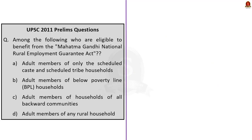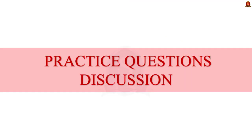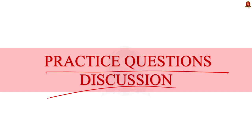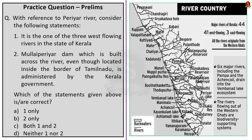Let us move on to the preliminary practice question discussion. With reference to Periyar River, statement 1 says it is one of the three west-flowing rivers in the state of Kerala, and statement 2 says the Mullaperiyar Dam, even though located inside Tamil Nadu's border, is administered by the Kerala government. The correct answer is option D, neither one nor two. Statement 1 is incorrect because most rivers in Kerala flow westward — the total west-flowing rivers in Kerala exceeds three. Statement 2 is also incorrect because Mullaperiyar Dam is located within Kerala but administered and operated by Tamil Nadu.